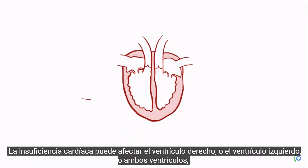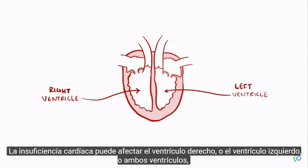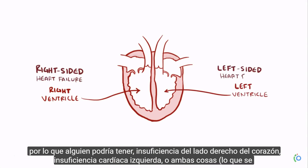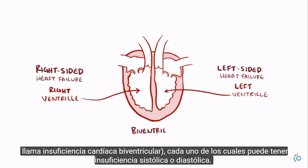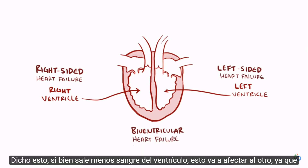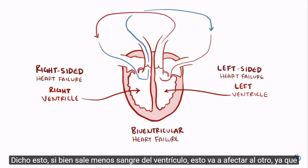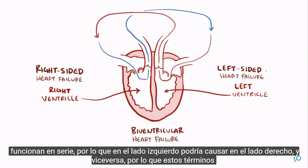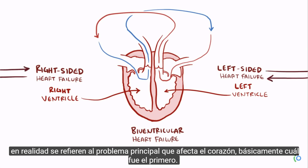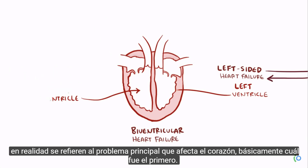Heart failure can affect the right ventricle, the left ventricle, or both ventricles. Someone might have right-sided, left-sided, or biventricular heart failure, each of which can have systolic or diastolic failure. If less blood exits either ventricle, it'll affect the other since they work in series — so left-sided could cause right-sided and vice versa. These terms really refer to the primary problem, basically which one was affected first.